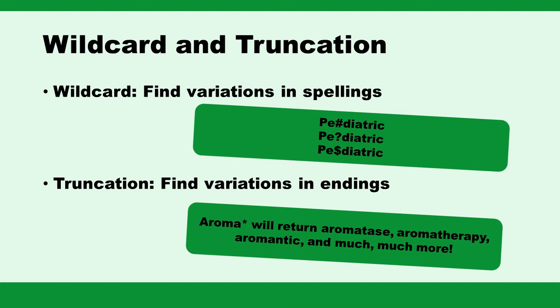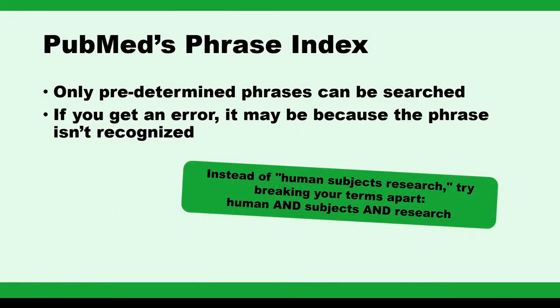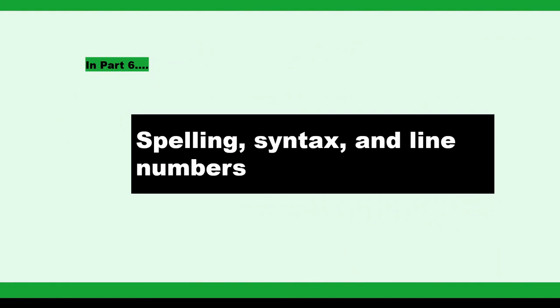Something else to be aware of: PubMed operates with a phrase index. If you get an error in PubMed noting that your phrase is not found, it is probably because it does not exist in the phrase index. Instead, try searching each word separately with 'and', which increases sensitivity but ensures that the terminology will be retrieved. In Part 6, we will investigate spelling, syntax, and line numbers.